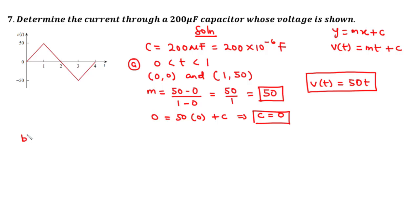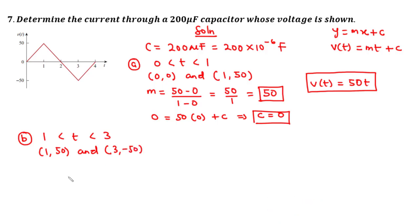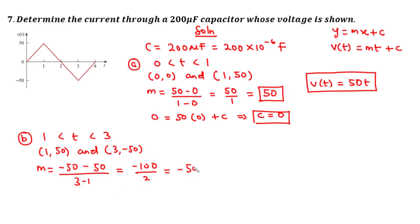Moving to the second interval from 1 to 3, that is 1 less than t less than 3. The initial point is (1, 50) and the final point is (3, -50). The gradient m = (-50 - 50) / (3 - 1) = -100 / 2 = -50.